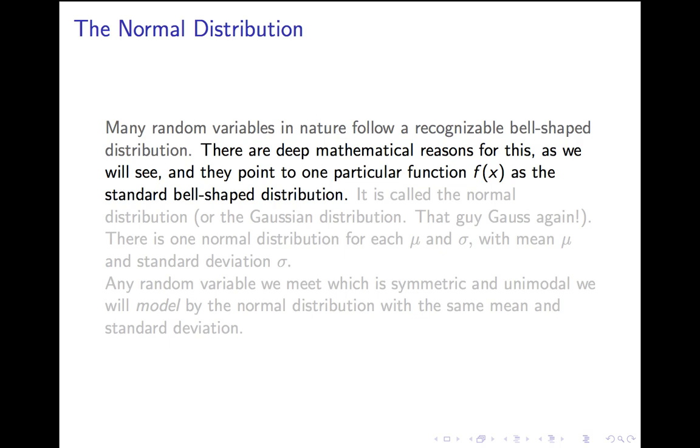That special function, which is called the normal distribution, or the Gaussian distribution, named after our friend Gauss, there is one normal distribution for each mean and standard deviation. So we can think of it as depending on μ and σ.